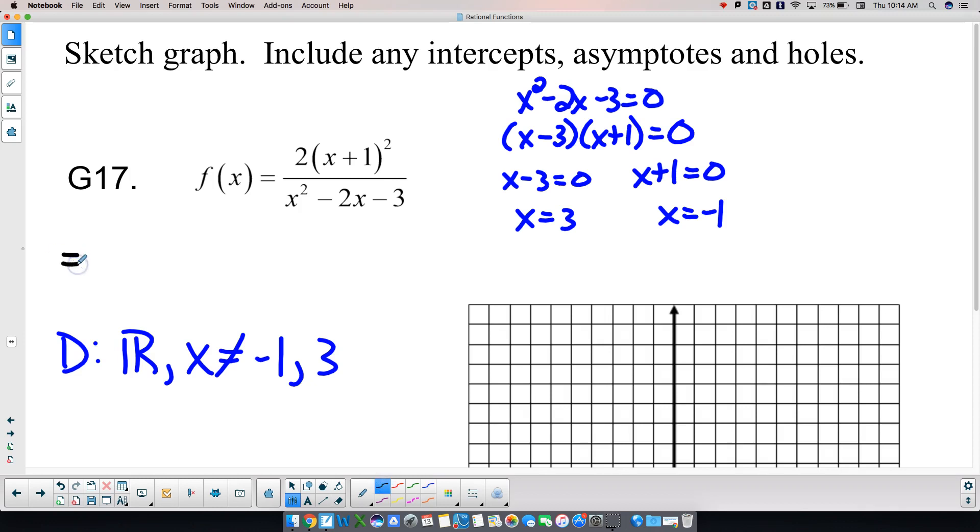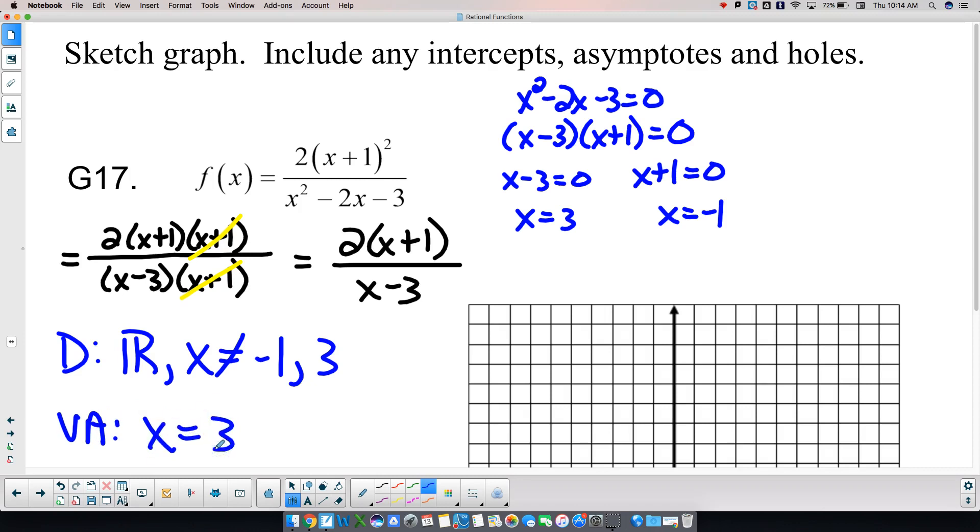This function factors to be 2 times x plus 1 over x minus 3 times x plus 1, which means then that those x plus 1's cancel each other out, which means there's a hole. So on my new function then, I only have one vertical asymptote, and that's x equals 3.